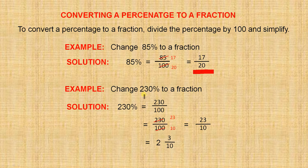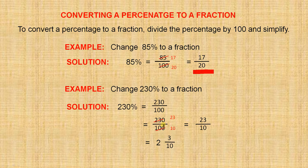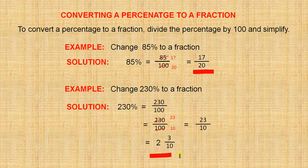Change 230% to a fraction. So 230 over 100 — the working is: 10 into 230 is 23, and 10 into 100 is 10. The answer is 23 over 10, which is 2 and 3 tenths.